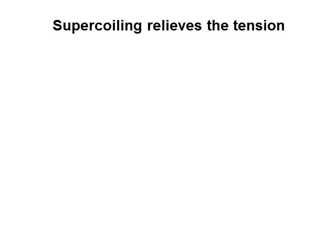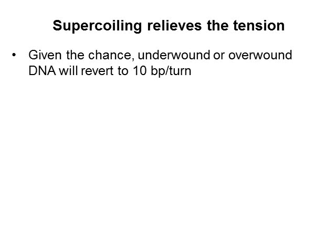In the previous video, I defined twist as the number of complete turns one strand of a double helix makes around the central helical axis. I mentioned that B-DNA prefers a twist of 10 base pairs per turn. If the twist is made higher or lower than that, the double helix is overwound or underwound, and it experiences tension. One way to relieve this tension is to generate supercoiling. Supercoiling results when the DNA reverts back to 10 base pairs per turn after it's been overwound or underwound.